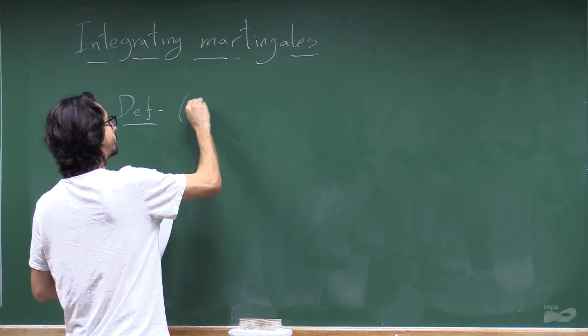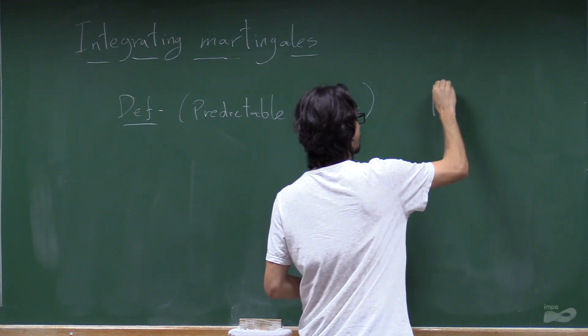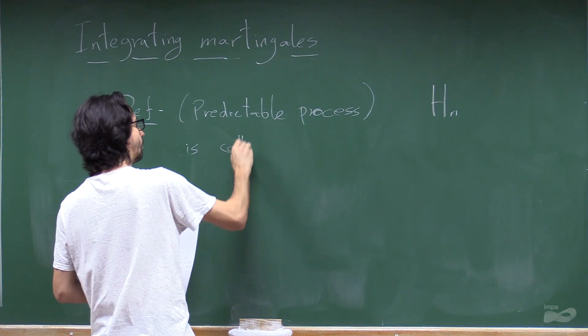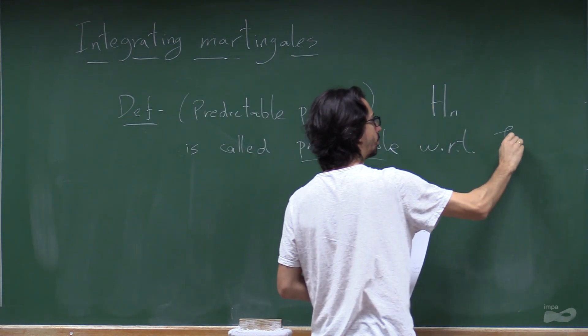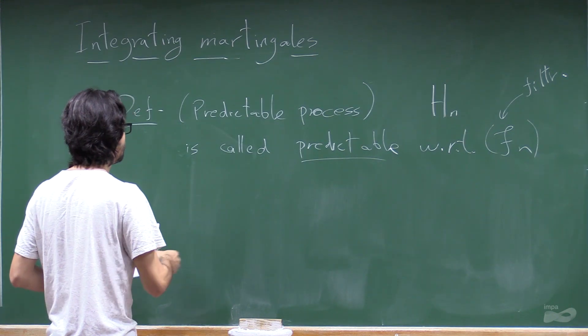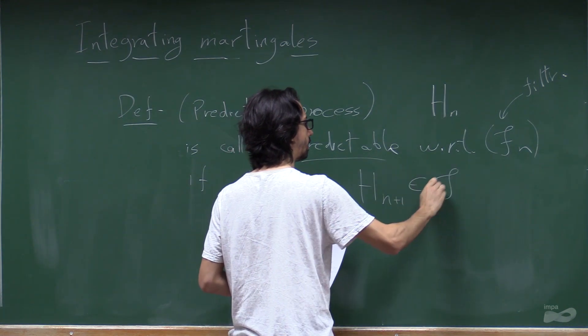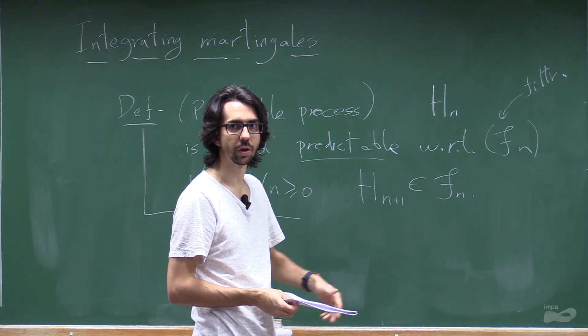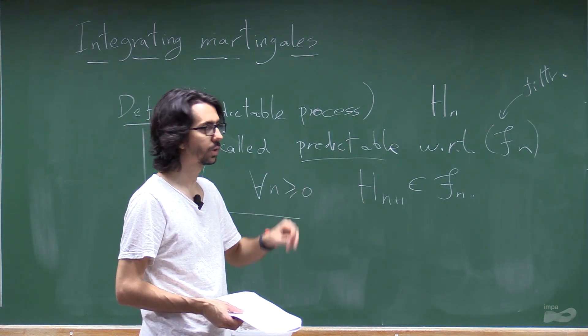So a predictable process is a process Hn such that we need a filtration and a process Hn is going to be called predictable with respect to this filtration if for every n, Hn plus 1 belongs to Fn. It's quite silly. Remember that if we remove this plus 1 here, we have the definition of adapted. So, for example, the amount of money you have in your martingale is adapted. But the decisions you take have to be predictable.